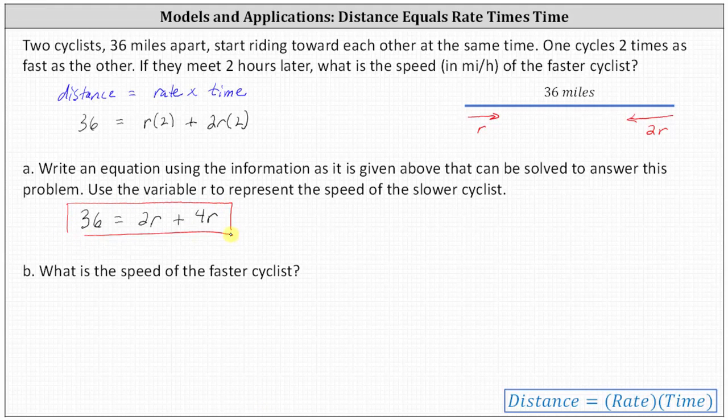For part B, to determine the speed or rate of the faster cyclist, we now need to solve the equation for R, then determine the value of 2R. Remember 2R is the rate or speed of the faster cyclist. So looking at our equation again, let's first simplify the right side. 2R plus 4R is 6R, giving us 36 equals 6R.